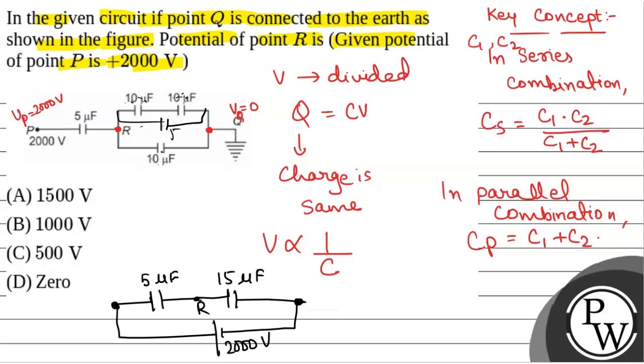Now if we take potential difference across point P and R as V1, we will have, as V is inversely proportional to C, V1 will be equal to 15 by 15 plus 5 into 2000.